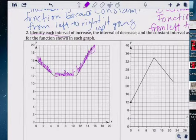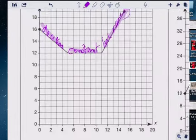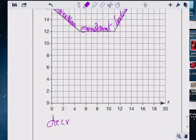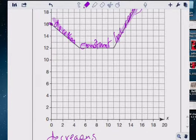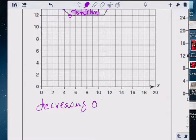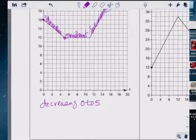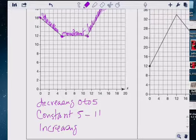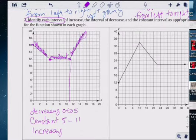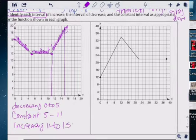So, identify the interval. Decreasing, it's from zero to five. Constant, it's from five to eleven. Increasing, it's from eleven to fifteen. It's too easy.